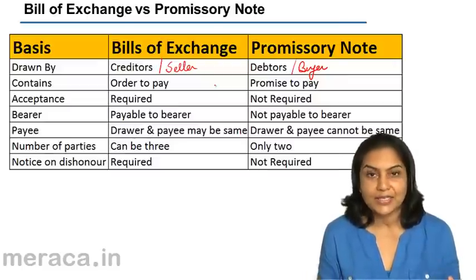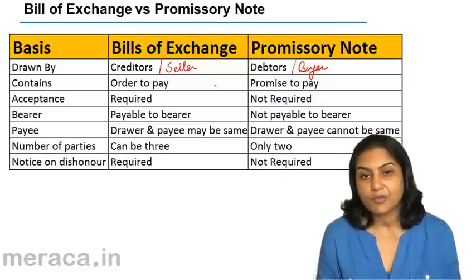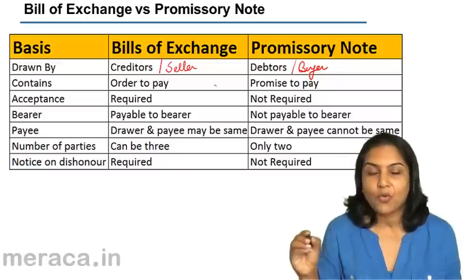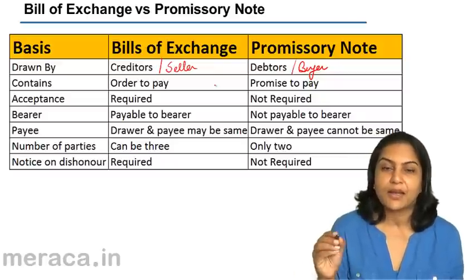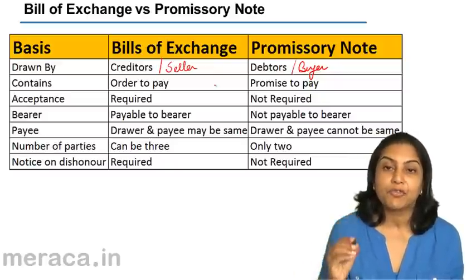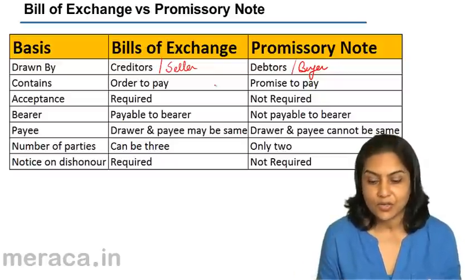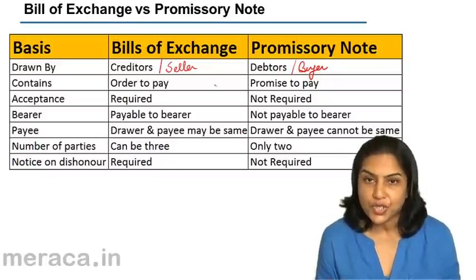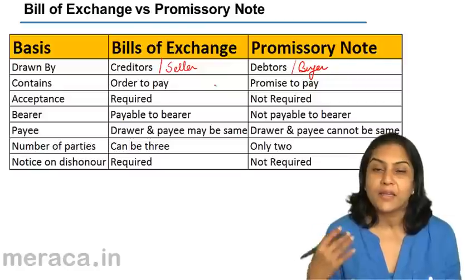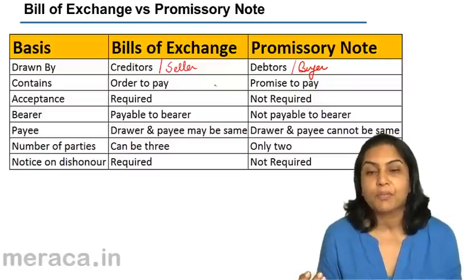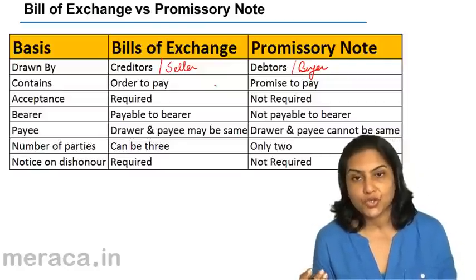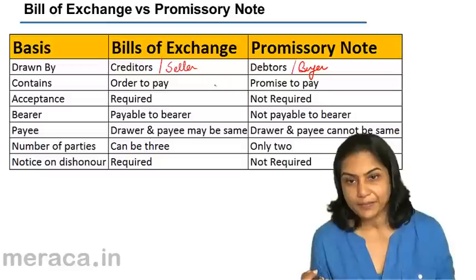So X made an order — it was ordering Y to make a payment of Rs. 20,000. But in case of a promissory note, Y himself would make the promise to pay.